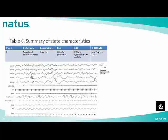In this stage R example, EEG shows LVI or mixed pattern, respiration is irregular, eyes are closed with small movements, rapid eye movements are seen on EOG, and chin EMG tone is absent with some transient muscle activity.